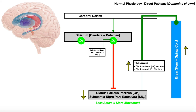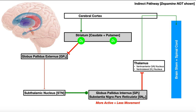Now let's look at the indirect pathway, again without dopamine first. By itself, the indirect pathway is going to inhibit movement or suppress unwanted movement. You're sitting in your chair watching this video and your arms aren't flailing around — you're sitting statically. Those movements are not happening because they're being suppressed. So the indirect pathway is always suppressing unwanted movement.